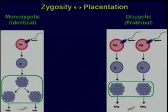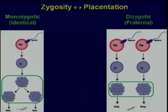Another important feature is the placentation of twins, whether they're monozygotic or dizygotic. Placentation refers to whether they're monochorionic or dichorionic, monoamniotic or diamniotic. Placentation has a relationship to zygosity, but it is different from zygosity.